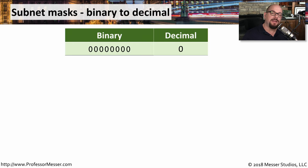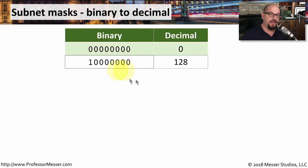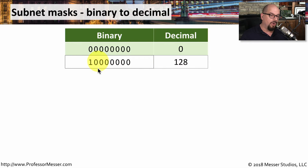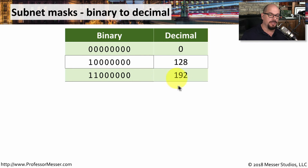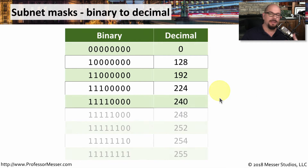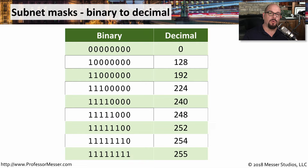If you only have eight bits available in each one of these octets, then there's only a certain number of combinations of binary to decimal representations you can have. For example, all zeros would be zero, a one in all zeros is going to be 128, two ones in all zeros is 192, and so on. Instead of performing a manual calculation every time, you could simply use this chart to easily convert between binary and decimal.